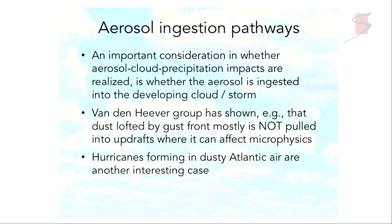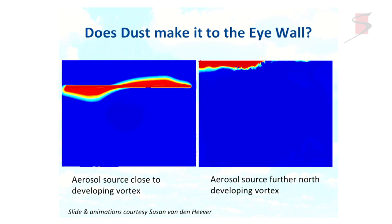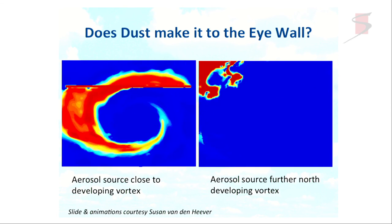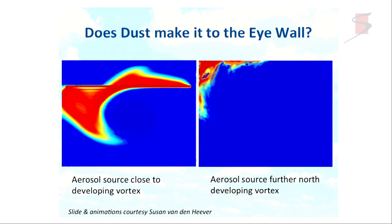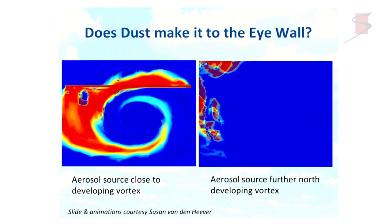The aerosol ingestion pathway is extremely important — whether aerosol is ingested into a developing cloud and storm from the boundary layer, from aloft, and where those layers may be. Sue's group has shown that dust lofted in a gust front is not very readily pulled into the updrafts where it can affect microphysics; it just remains closer to the surface. She's also been looking at hurricanes that form in dusty Atlantic air, and provided me this really cool animation. What they've done is put aerosol sources at different locations from the vortex of a developing storm. When the aerosol is too far away it begins to be ingested but is just rained out in the rain bands, whereas when it's located at a different position it's pulled in and can actually invigorate the vortex through interactions with cloud microphysics.